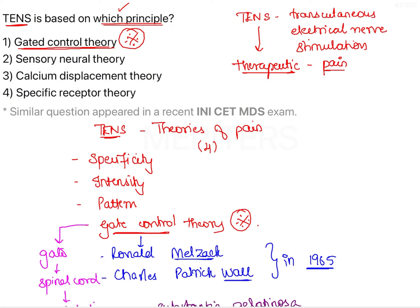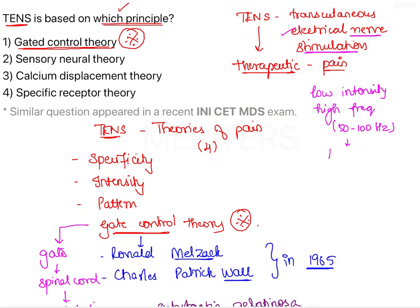Getting back to TENS — Transcutaneous Electrical Nerve Stimulation — we are stimulating a specific nerve by passing electric current transcutaneously. The electric current is of low intensity but high frequency, about 50–200 Hz, and this is sufficient to stimulate the A-beta fibers. TENS is based on the anti-nociceptive effect of cutaneous nerve stimulation, specifically the A-beta fibers, as it is not sufficient to reach the threshold to stimulate A-delta and C fibers to produce pain. Once A-beta fibers are stimulated, they result in release of neurotransmitters such as serotonin and dynorphins, which bring about immediate pain relief.